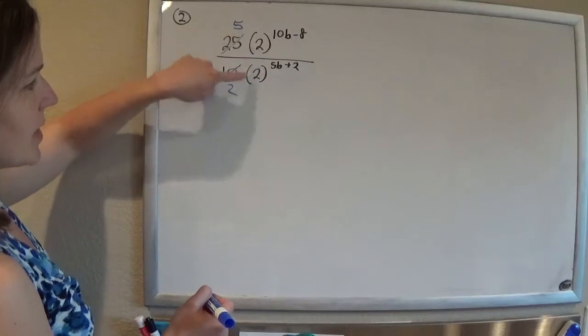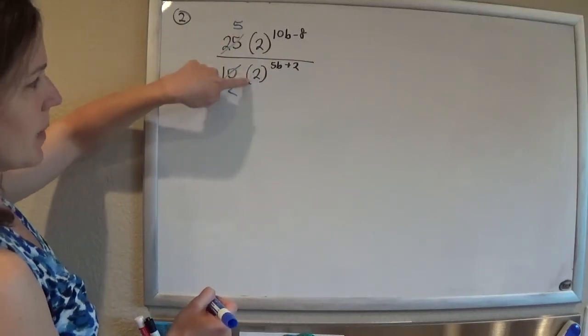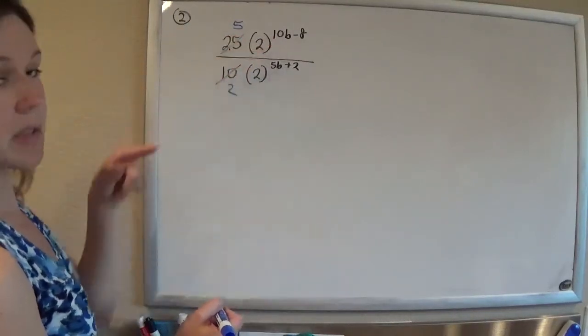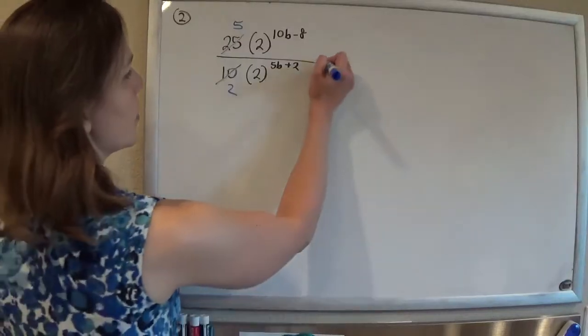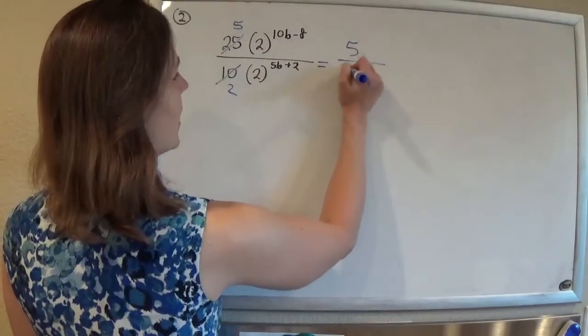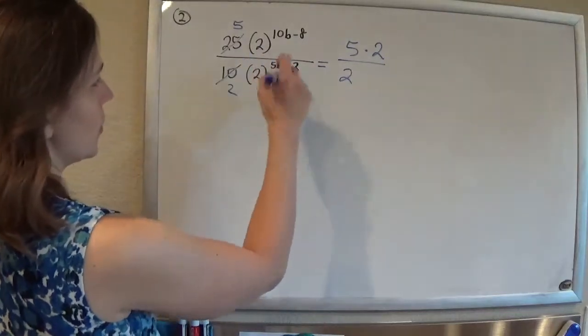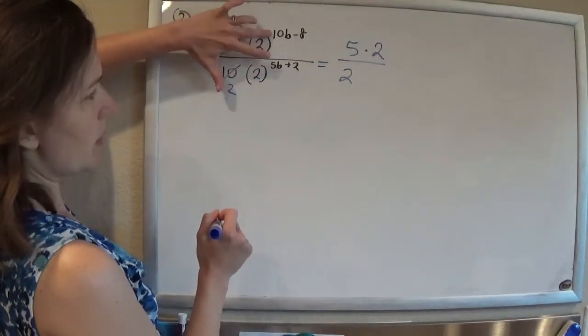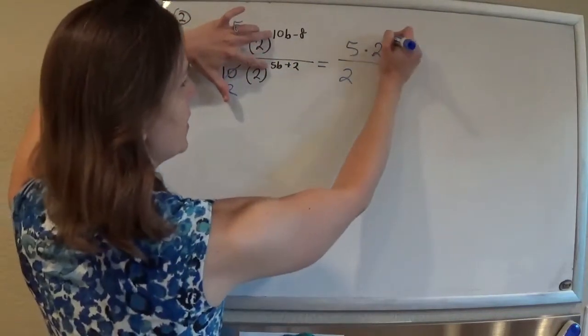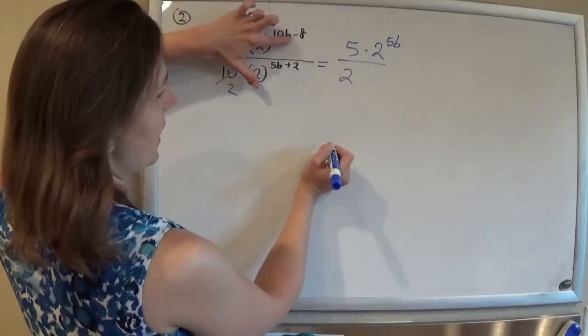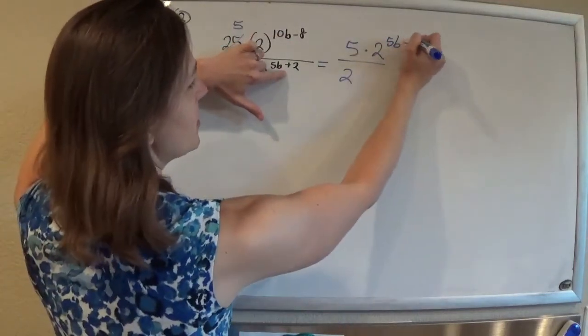These guys here have the same base. So if they have the same base, our rules with exponents is that we can subtract the exponents. So what we'll have is the 5 over 2, and then times 2. So if I subtract my exponents, 10b minus 5b is 5b, minus 8 minus 2 is minus 10.